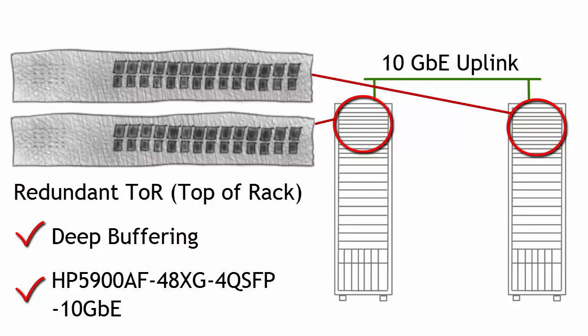Make sure the switch has deep buffering on it as well. You want the highest interlink speed or uplink speed that you can have between the racks. We currently have a 10 gig connection, but a 40 gig connection would be great as well.